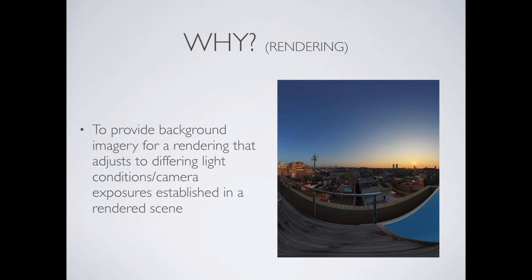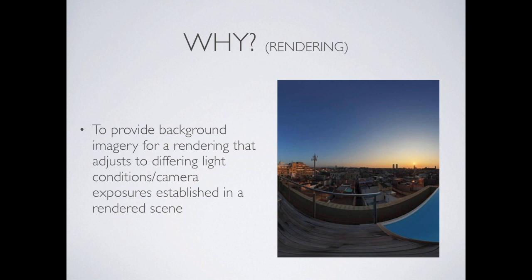There's another big reason HDR images are important, and that is in rendering. If I'm creating a rendering in Rhino and Vray and I want sky in the background, Rhino and Vray can change the camera exposure to whatever you want. The background image — the sky — has to change based on the settings in the rendering engine. So we create a special background file called an HDRI, a high dynamic range image, that dynamically changes lighting conditions based on what the rendering engine needs. If you do 3D modeling and rendering, high dynamic range is critical.